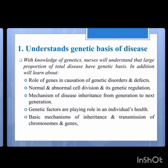Role of genes in causation of disease conditions and their defects — we have to understand and give information to patients. Normal and abnormal cell division — we should know mitosis and meiosis and any abnormalities. Mechanisms of disease inheritance from genetics to the next generation — how the genetic information transmits from parents to children. Genetic factors playing a role in an individual's health, and basic mechanisms of inheritance and transmission of chromosomes and genes — all of this we should understand.